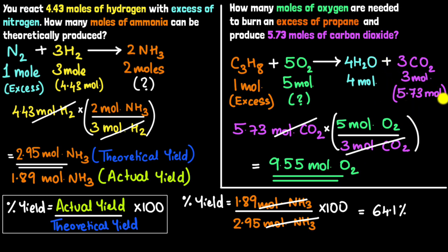Again, this represents the theoretical yield. When we do stoichiometry on paper, the numbers we get for the product will always be the theoretical yield.